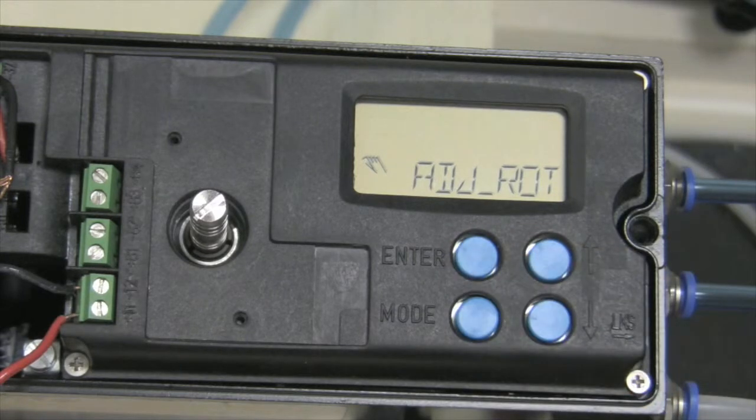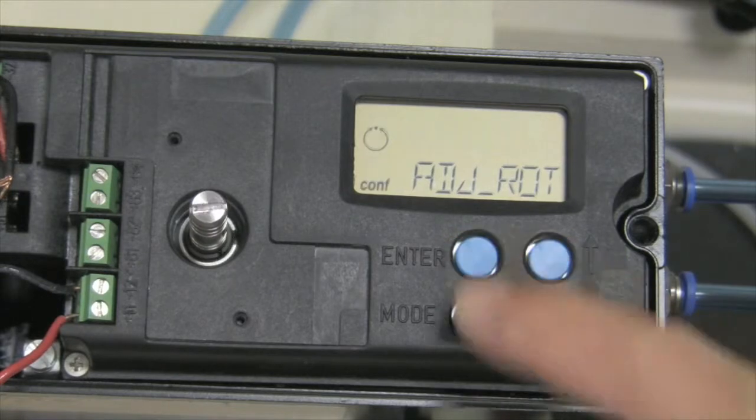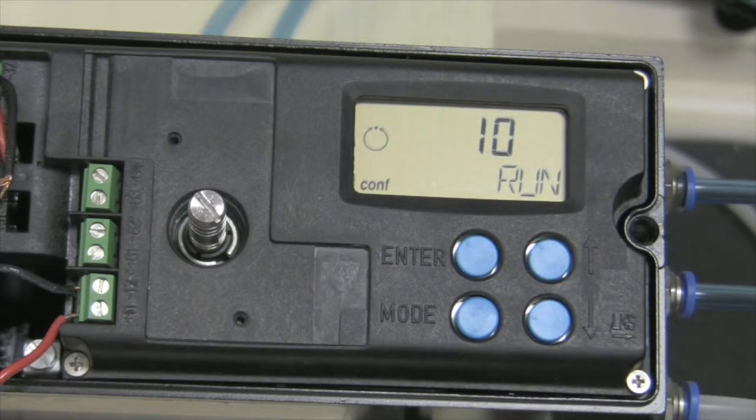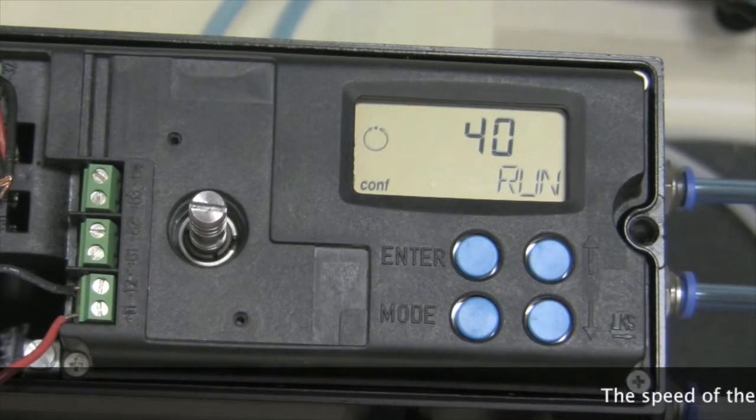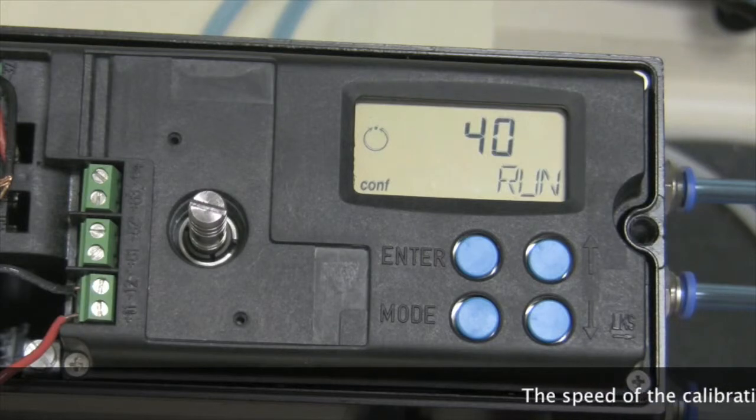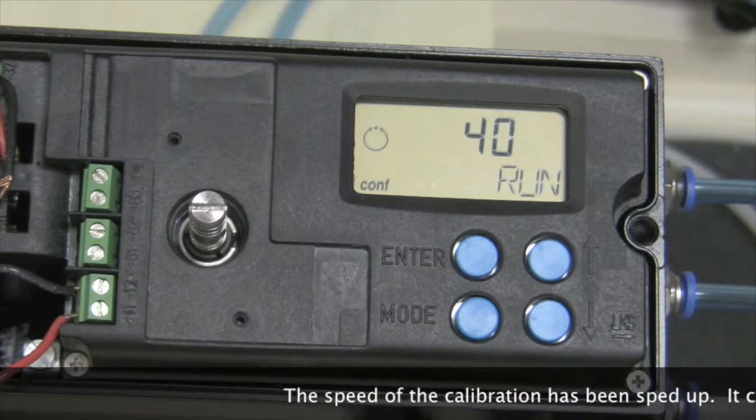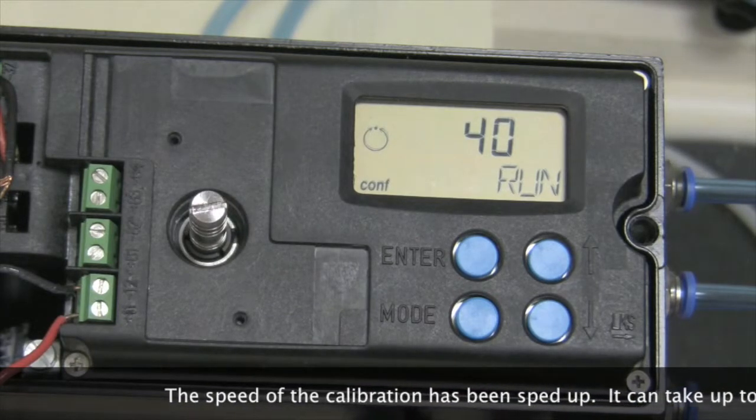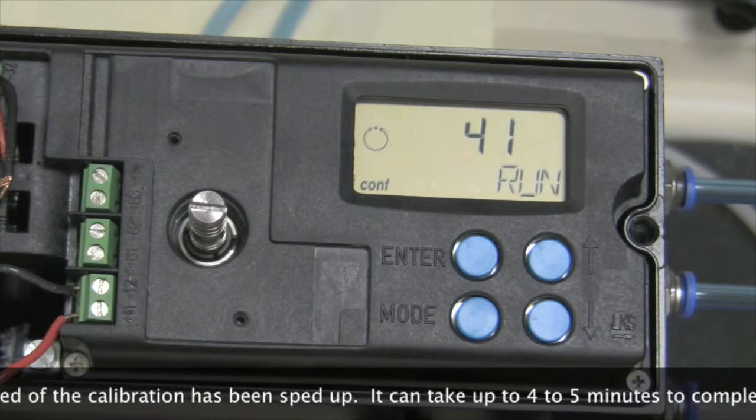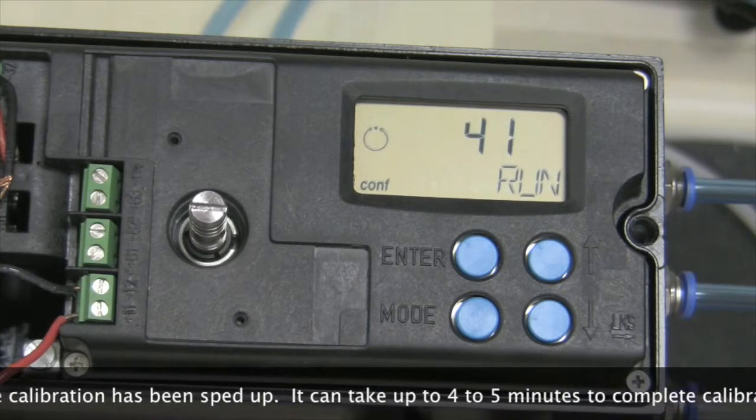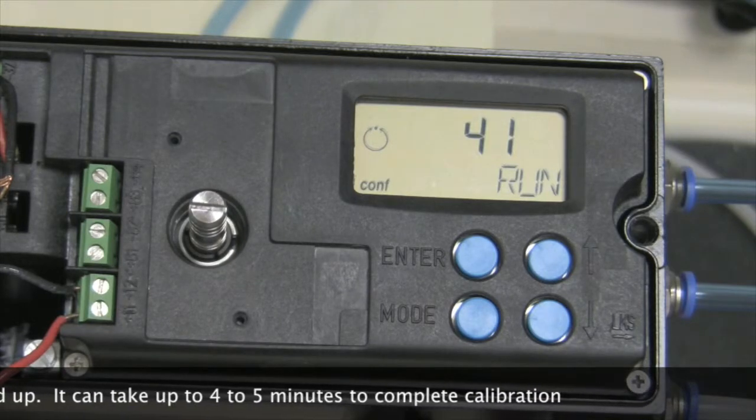Once it appears, we release the enter button. Then we press it and hold it through the countdown. Now the positioner will calibrate itself.